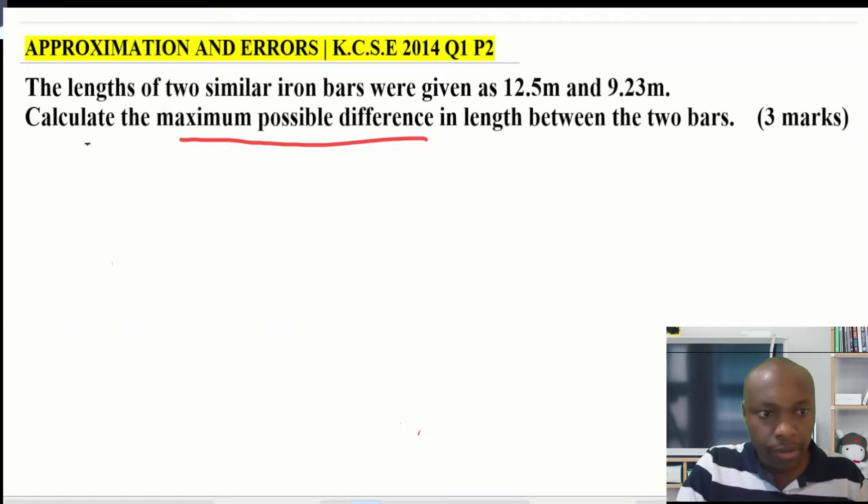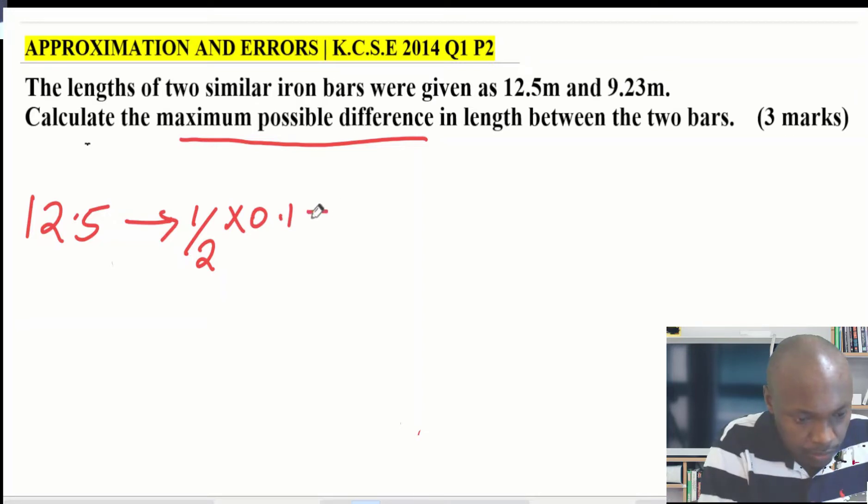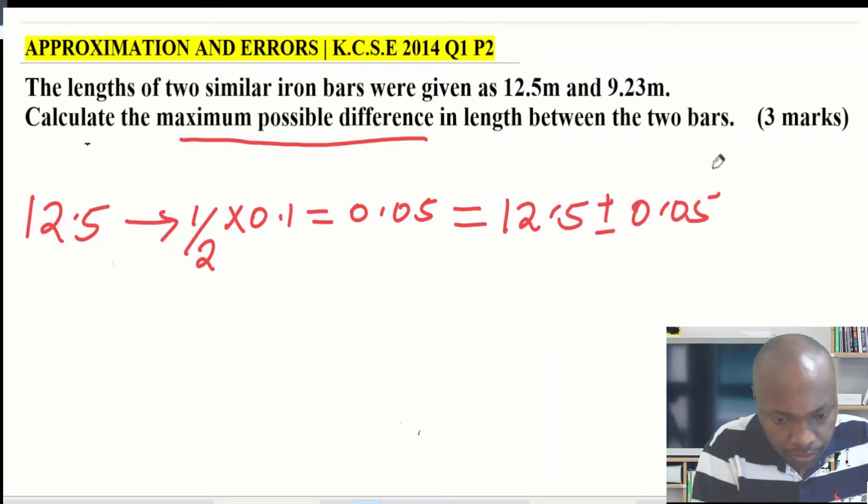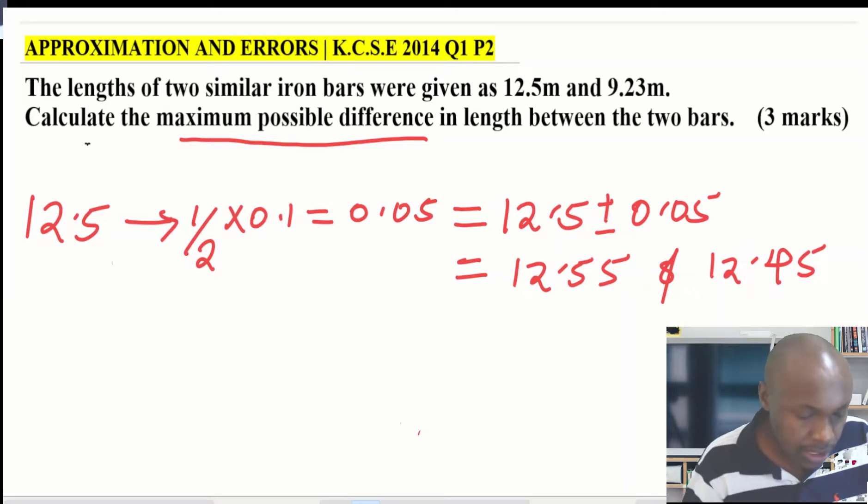We start with 12.5. For 12.5, you can see it is correct to one decimal place. The absolute error will be obtained by half times the smallest unit of measurement, which is 0.1. So the absolute error in that measurement will be 0.05. Therefore, the limit here will fall between 12.5 plus or minus 0.05, and this gives the limits as 12.55 as the upper limit and 12.45 as the lowest limit.